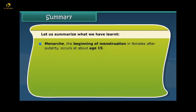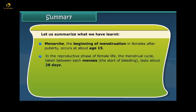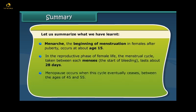The adrenal glands are chiefly responsible for regulating the stress response through adrenaline. Menarche — the beginning of menstruation in females after puberty — occurs at about age 15. In the reproductive phase of female life, the menstrual cycle taken between each menses, the start of bleeding, lasts about 28 days. Menopause occurs when this cycle eventually ceases between the ages of 45 and 55.